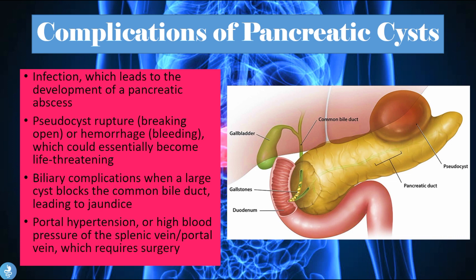We can also have biliary complications. When a large cyst blocks the common bile duct it will lead to jaundice. Bile usually drains into the duodenum via a ductal system closely related to the pancreatic ducts. When a cyst forms in that region, it prevents the gallbladder from releasing bile into the duodenum. The gallbladder then becomes enlarged, leading to cholecystitis — inflammation of the gallbladder — and large amounts of bilirubin float in the blood, spilling into the bloodstream and causing jaundice, the yellowing of the skin and mucosas.